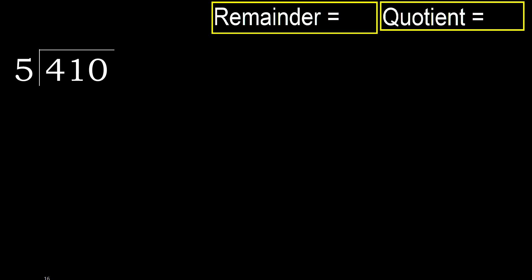410 divided by 5. 4 is less, therefore next. 41 is not less, therefore work with 41. 5 multiplied by which number is nearest to 41, but not greater?